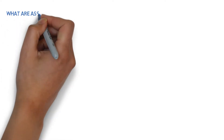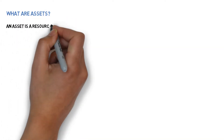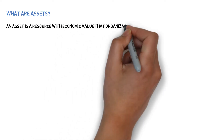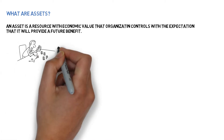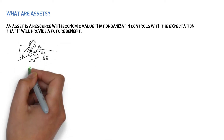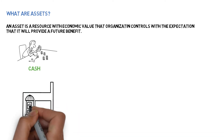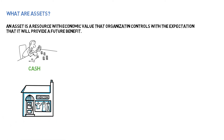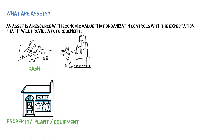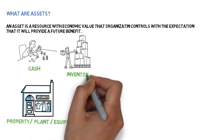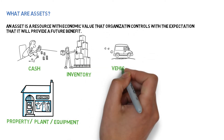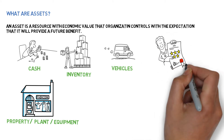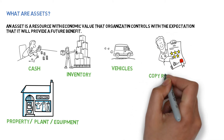What are assets? An asset is a resource with economic value that an organization controls, with the expectation that it will provide future benefits. Some examples are cash in hand or cash at bank, property, plants and equipment, inventories used in your business, vehicles or a fleet of vehicles, and intangible assets such as copyrights and trademarks.